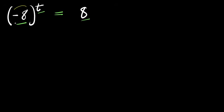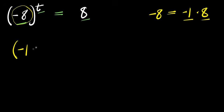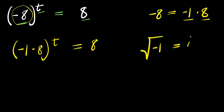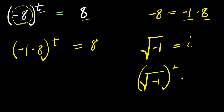In the first method, I can express negative 8 as negative 1 times 8. So I'm going to have negative 1 times 8 raised to the power T, and this equals 8. Now recall this identity: if you have the square root of negative 1, this equals the imaginary number i.